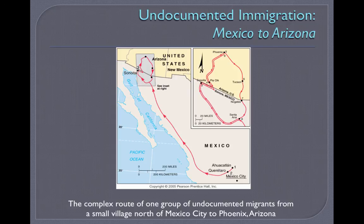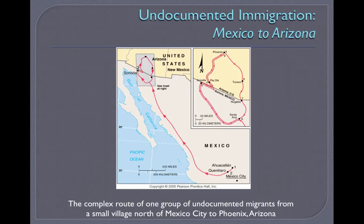One well-worn chain runs from Mexico to Arizona — from Ahuacatlán to Querétaro, up to Sonoyta, into Arizona near Phoenix, Tucson, Nogales, and Santa Ana. This shows the established route taken by one group of undocumented migrants from a small village north of Mexico City to Phoenix, Arizona.